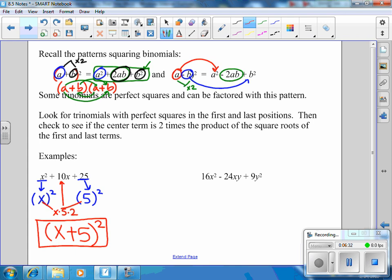And then we would also get that if we did it the way that we already know how to do. So from now on, when you have a trinomial, look for trinomials with perfect squares in the first position and in the last position. And then you have to double check to see if the center term is 2 times the product of the square roots of the first and the last terms.